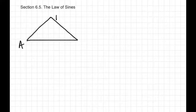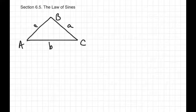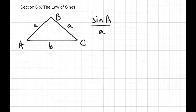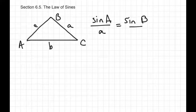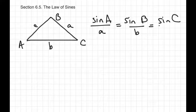The way the Law of Sines works for angles A, B, C and sides a, b, c: the sine of angle A divided by side a is equal to the sine of angle B divided by side b, which is equal to the sine of angle C over side c. It's just a nice little proportion system.